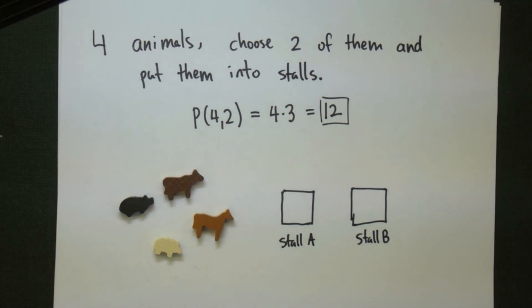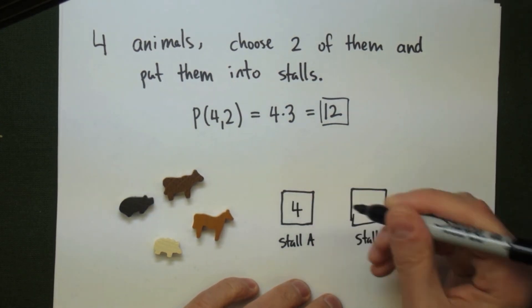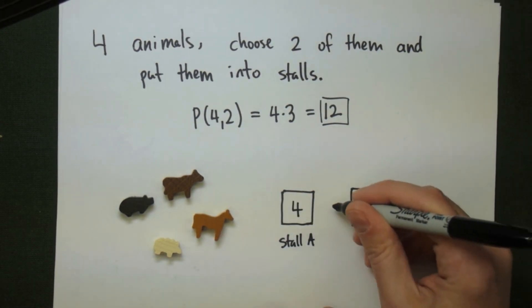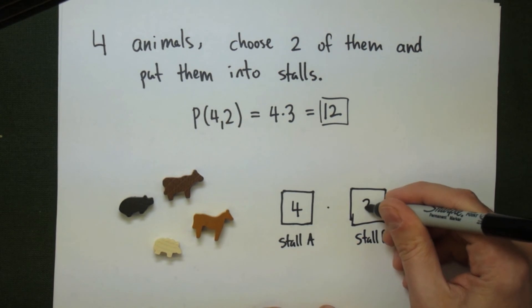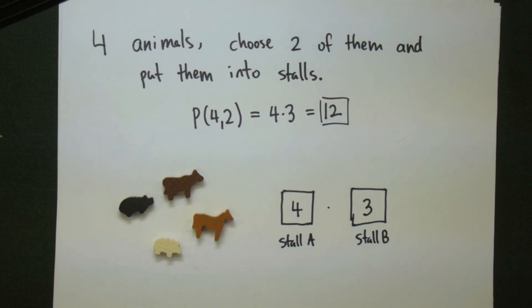You might notice that all this is is the multiplication principle — there are four choices for what animal to put in stall A, and then three choices for what animal to put in stall B. The thing to remember is that if order matters, we use permutations; if it doesn't, we use a combination.